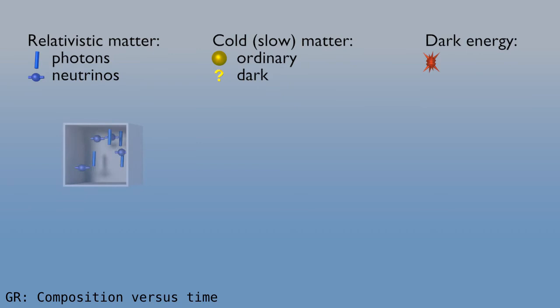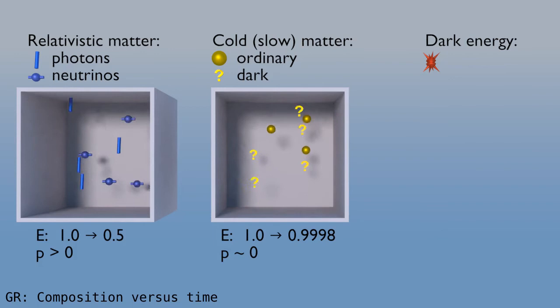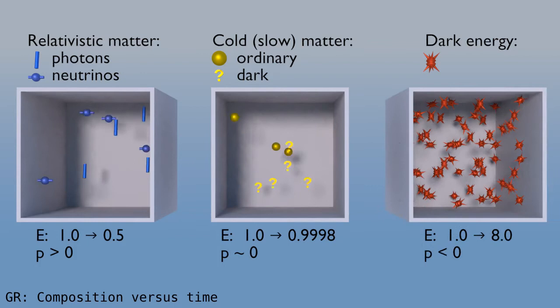We saw before that when space expands by a factor of two, then photons and neutrinos, which move at about the speed of light, they lose half of their energy. This loss of energy means two things. First, they contribute less to the mass energy of the universe. And second, the pressure was positive, just like for the ideal gas. On the other hand, slow matter only loses a little bit of energy, so the pressure is very small. And dark energy is usually assumed to be constant per volume. So when the volume increases by a factor of eight, then the energy increases by eight. In other words, dark energy contributes more, and the pressure must be negative.